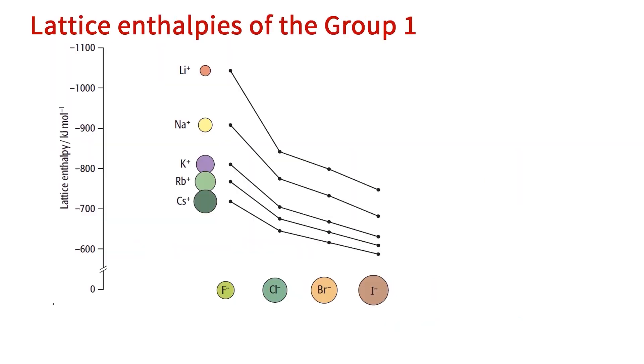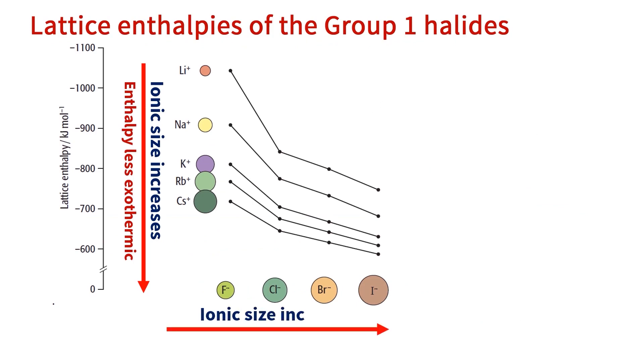Let's look at the graph for lattice enthalpies of Group 1 halides. You can see that the lattice enthalpies are less exothermic and less negative going down Group 1. The sodium ion has a larger ionic size than lithium ion. Accordingly, sodium ion has a lower charge density than lithium ion, which explains the less exothermic lattice enthalpy of sodium fluoride compared to lithium fluoride.